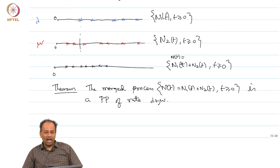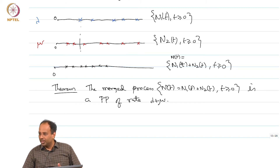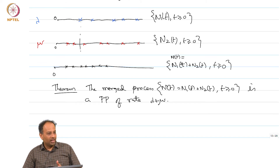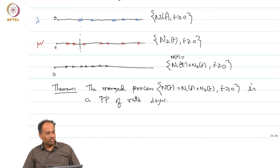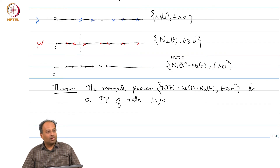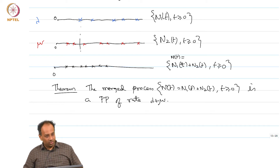Likewise, if you have k independent Poisson processes of rates lambda_1 through lambda_k and you merge all of them, you get a Poisson process of rate lambda_1 + lambda_2 + ... + lambda_k. You can use definition 3 only if this theorem is given — but this is the theorem I want to prove.